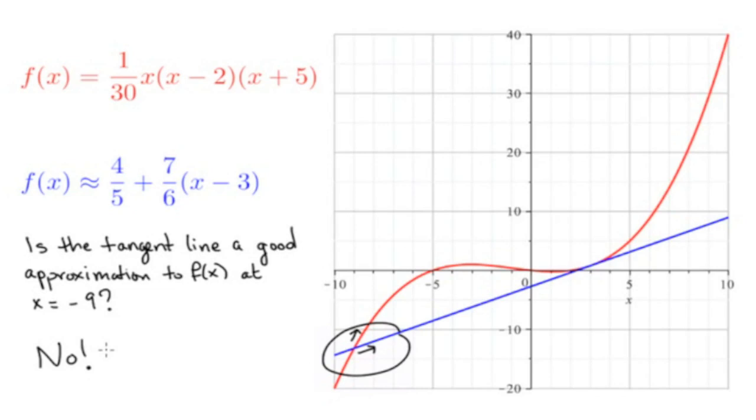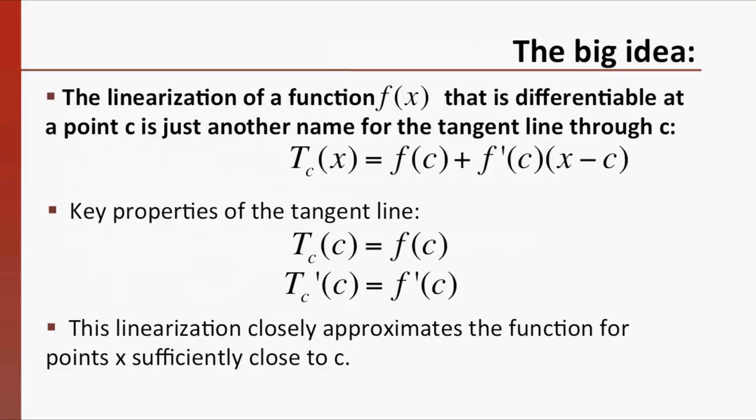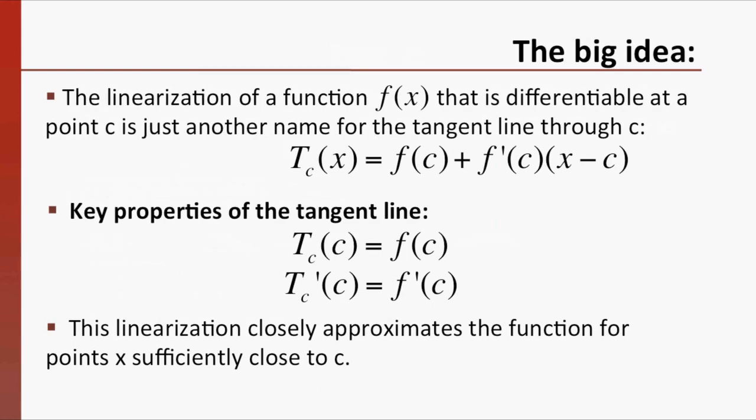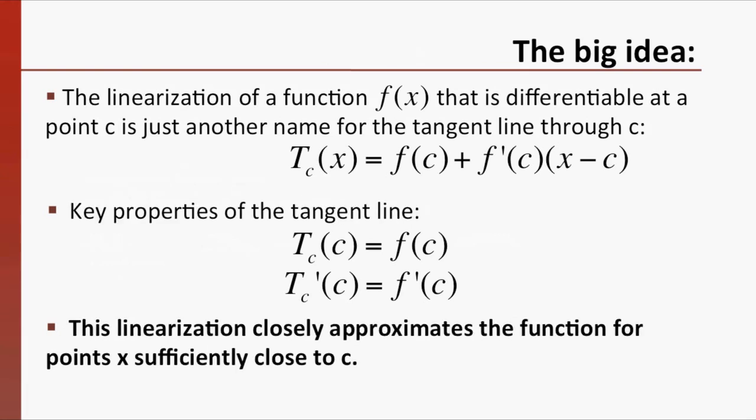No measurement or observed quantity is ever given exactly. The linearization of a function that is differentiable at x=c is just another name for the tangent line through c. The key properties of this tangent line are that it shares the same value as the function and the same first derivative of the function at x=c. And we've seen through both graphical intuition and the definition of the derivative that this linearization closely approximates the function for points x sufficiently close to c.